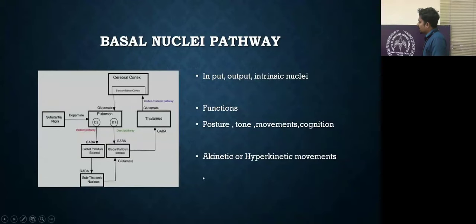In the basal ganglia pathway, it has three components: input, output, and intrinsic nuclei. The input nuclei are considered as caudate and putamen, and the substantia nigra pars compacta. The output nucleus was mainly considered as globus pallidus internum and the thalamus. The intrinsic nuclei were considered as globus pallidus externum, subthalamic nucleus, and the substantia nigra pars reticularis. The input nuclei receive mainly signals from the cerebral cortex via the glutaminergic pathways and the substantia nigra mainly via dopaminergic pathways.